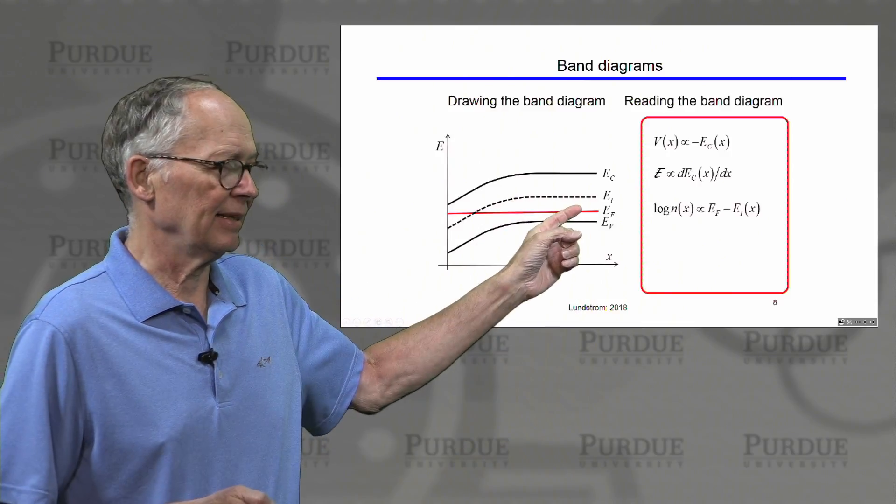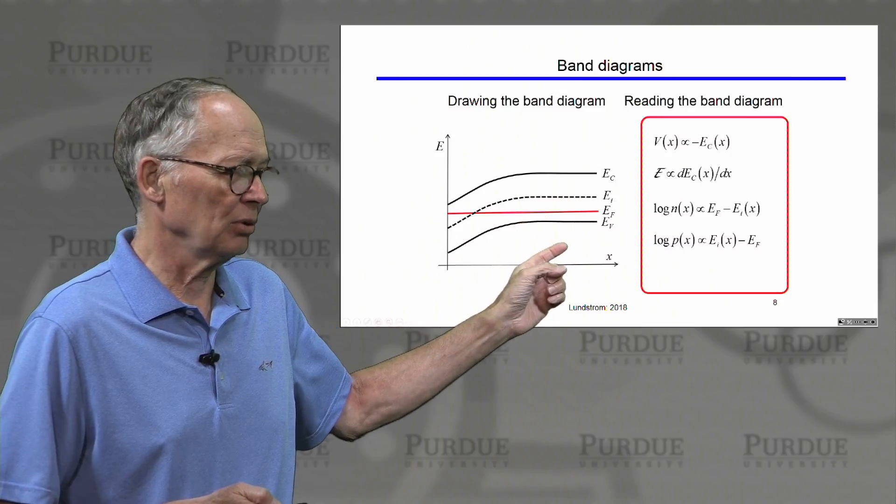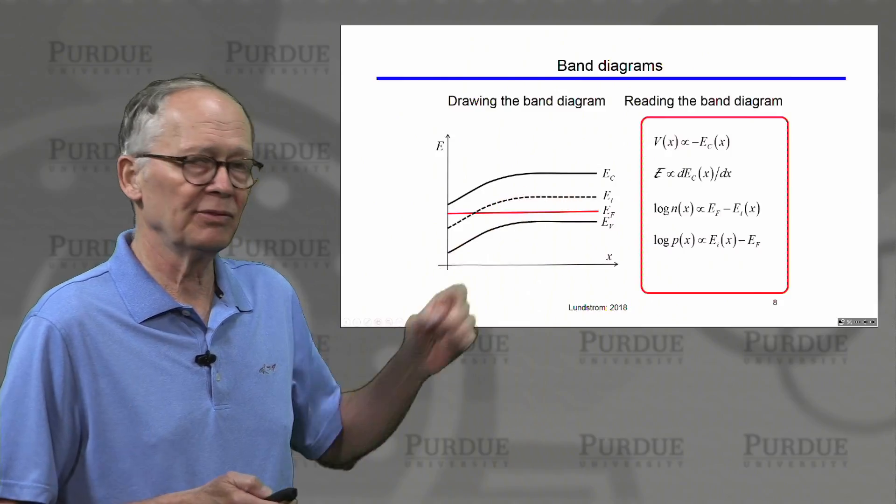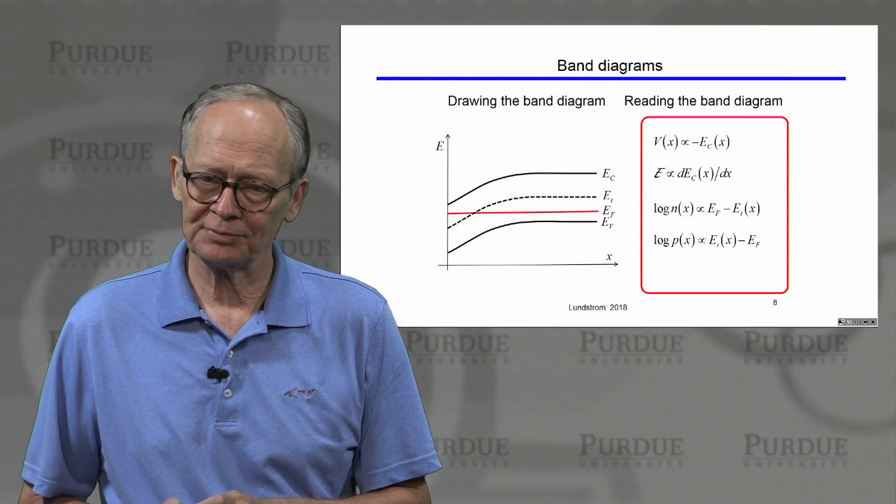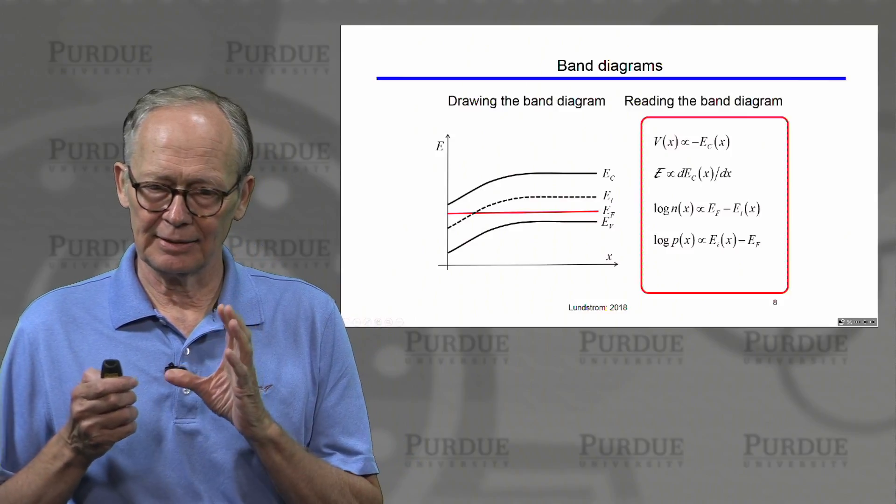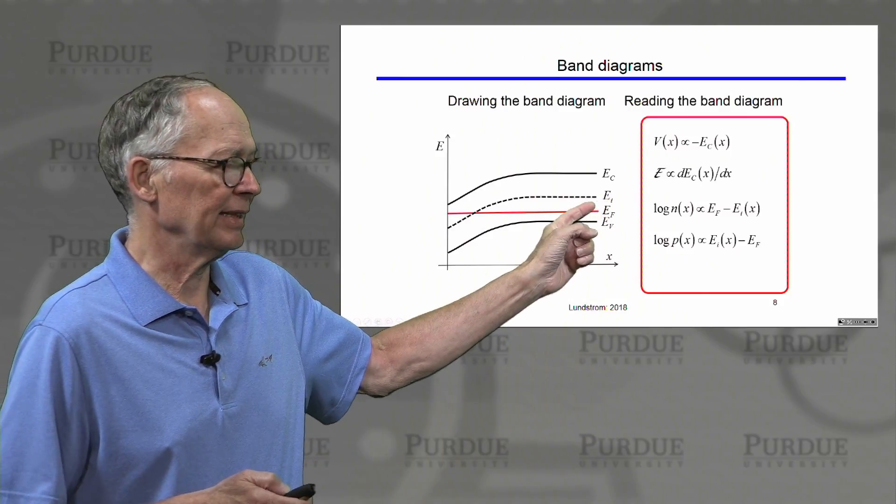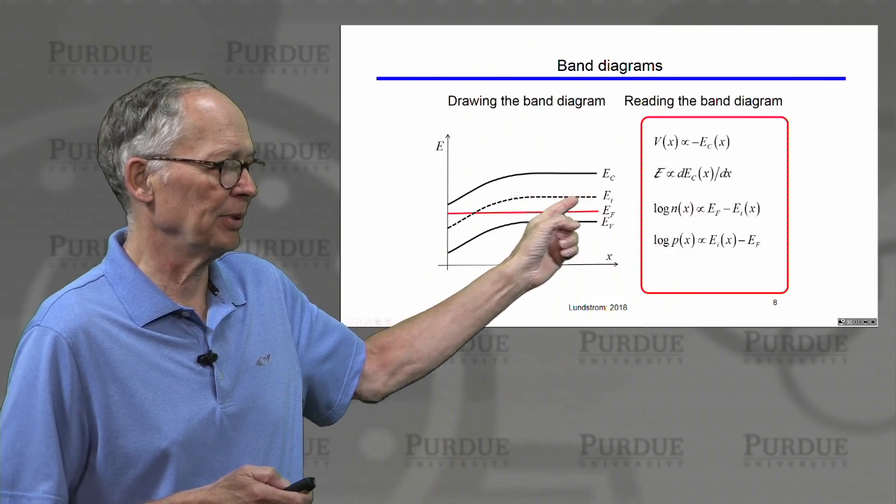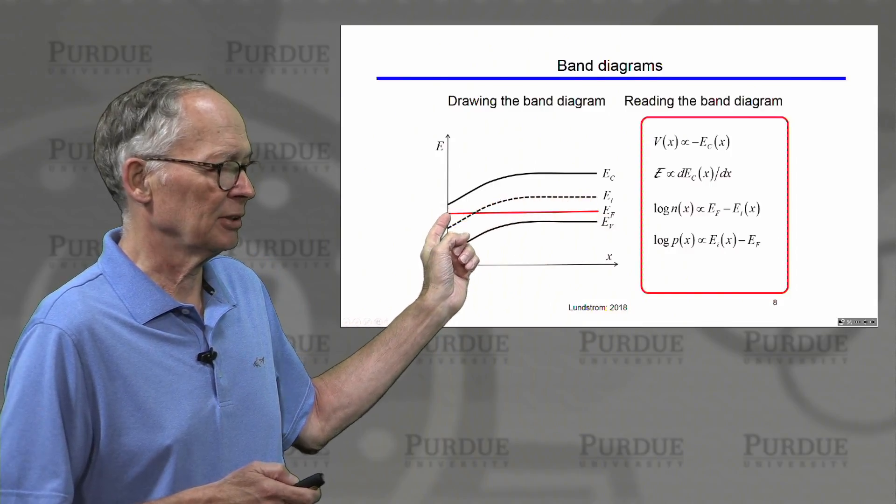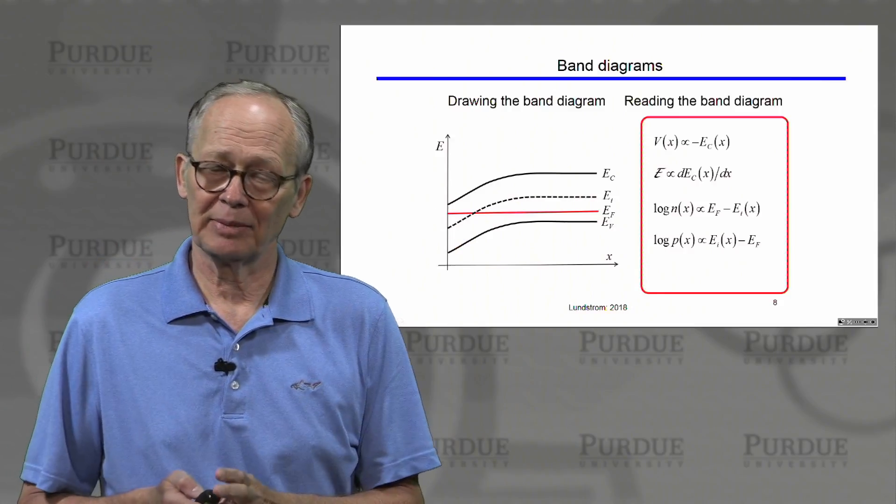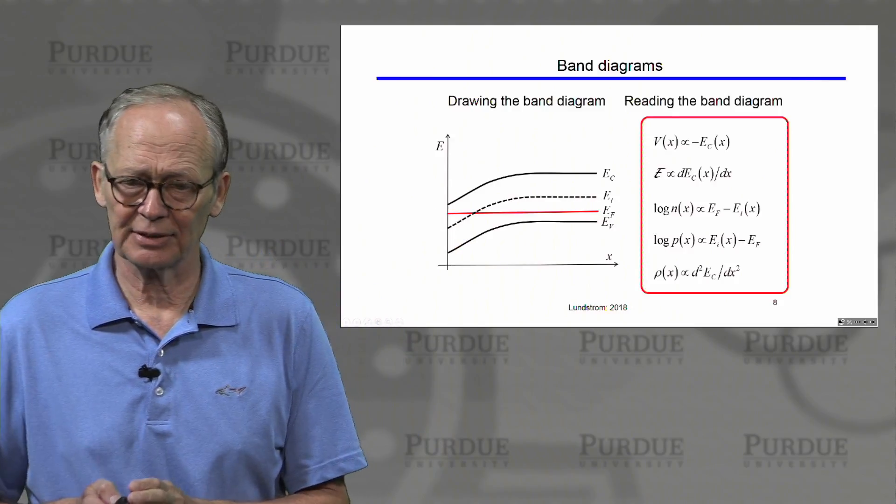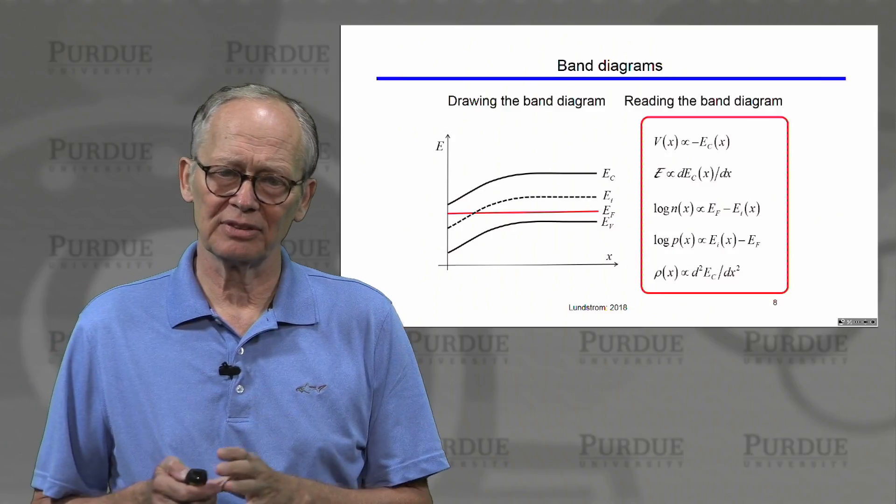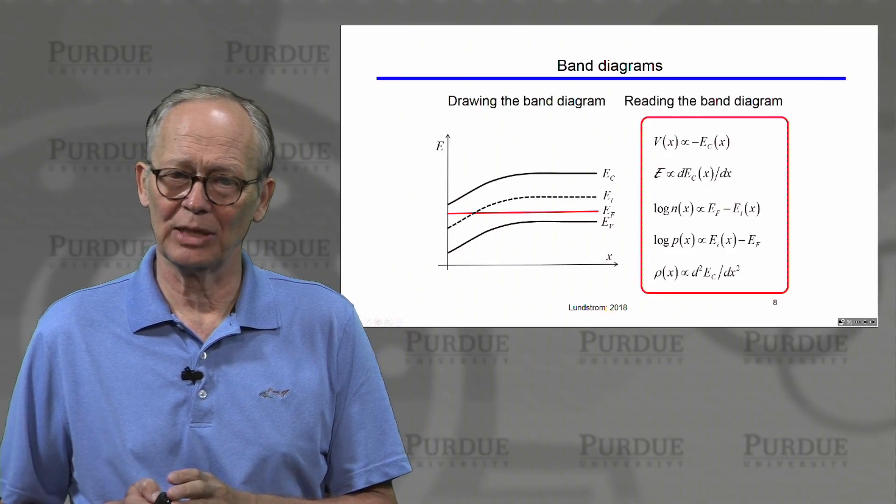We can relate the electron density or hole density to how far above or below the intrinsic level the Fermi level is. Here we see the Fermi level is below the intrinsic level, the semiconductor is p-type. Here the Fermi level is above the intrinsic level, so the semiconductor is n-type near the surface. We can also deduce the space charge density from a plot like this.